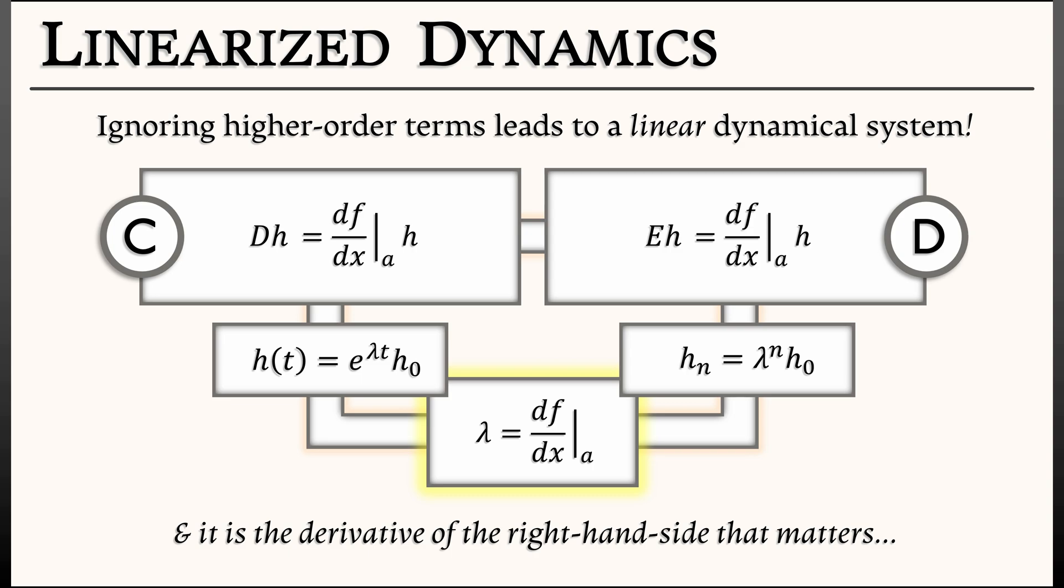In continuous time, it's dh equals lambda h. In discrete time, it's eh equals lambda h, where lambda is the derivative of the right-hand side, dfdx, evaluated at the equilibrium A.